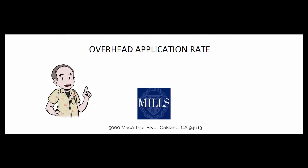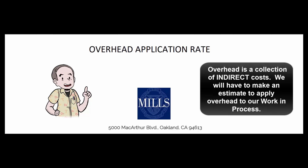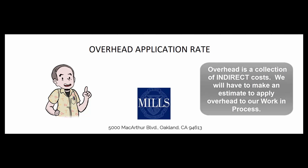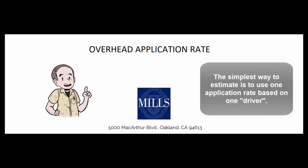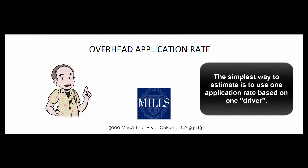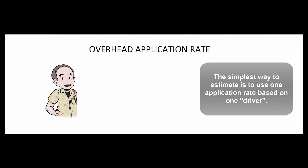If we're a manufacturer using job order costing or even process costing, we're going to need to estimate how much overhead gets applied to each job or each process. The beginning point for that is to have one rule — one application rate for one pool of manufacturing overhead.